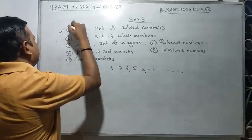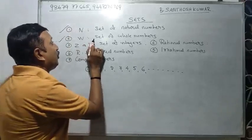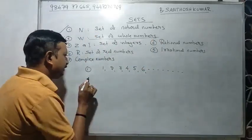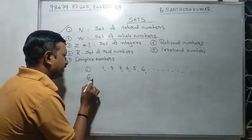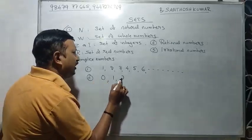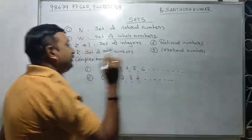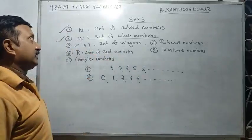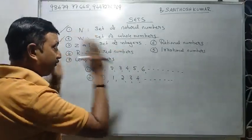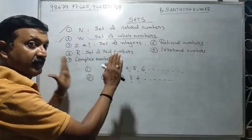W is the set of whole numbers. Whole numbers are 0, 1, 2, 3, 4, etc. This is the whole set — the whole base, the whole set of relations.